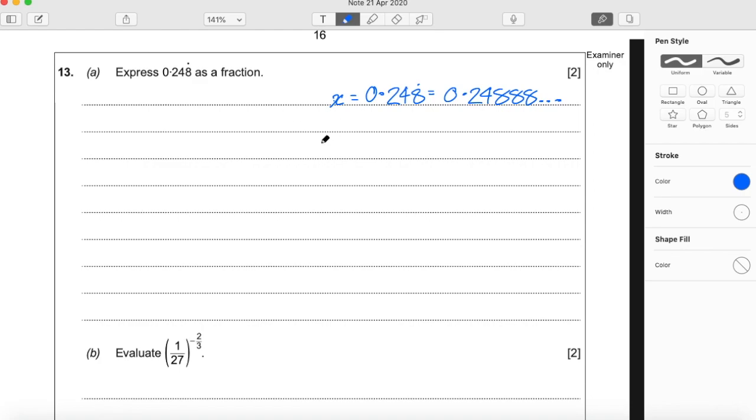We do that by multiplying both sides by 100. So we have 100x equals 1, 2, 24.888 forevermore.